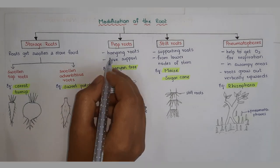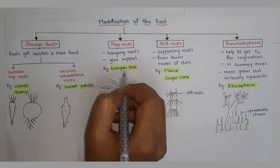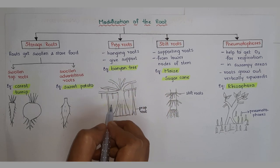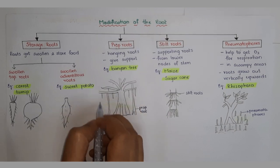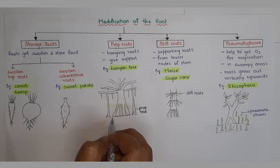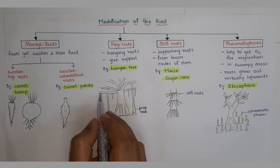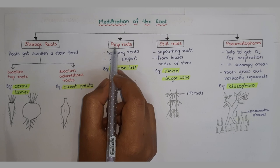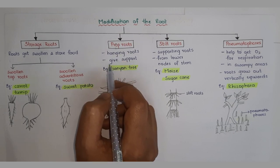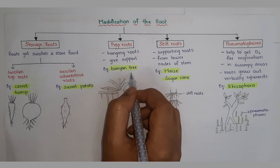Next, prop roots. Prop roots are hanging roots — the example is the banyan tree. The banyan tree has many hanging roots that grow downwards, reach the ground, and go into the soil, thus supporting the tree — supporting both the roots and branches. Because they give support, they are called supporting roots. Example: banyan tree.